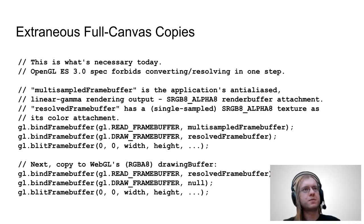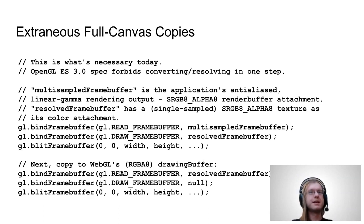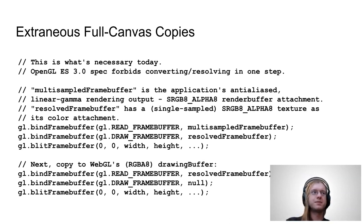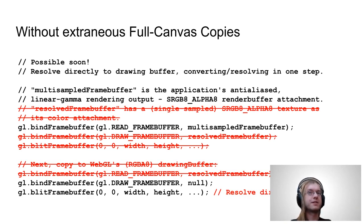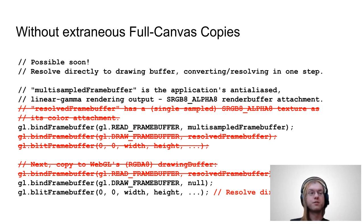Thanks, Ken. Here's what the code looks like today. You can see it's really obvious where the extraneous full-screen copies are coming from. We have two calls to blitFramebuffer. These calls are copying the entire width and height of the frame — first to resolve from multi-sampled to single-sampled into the resolve framebuffer, and then again copying from the resolve framebuffer to the drawingbuffer for WebGL. What we're hoping to do instead, on the next slide, is give you a backbuffer which is already compatible with your multi-sampled framebuffer, so that one of those blitFramebuffer calls is gone.